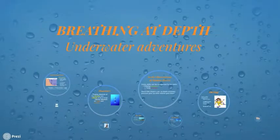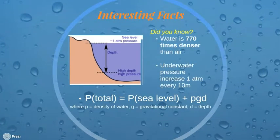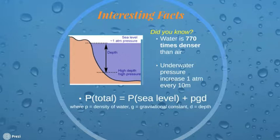The human body experiences a lot of changes when diving to great depths. Today we'll be going over some of these changes and what they mean to our ability to dive and survive underwater. Water is 770 times denser than air, so even modest depths translate to substantial changes in pressure. Underwater pressure increases by 1 atmosphere every 10 meters. So if you were to dive 30 meters, you'd experience a total pressure of 4 atm — 4 times greater than you would at sea level.